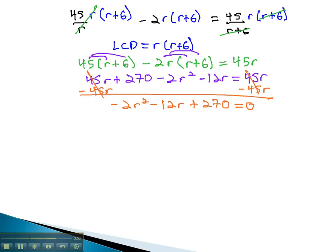We're ready to start solving by factoring. Factoring might be a little difficult with this problem, so how about we complete the square? Let's subtract 270, separating the variables from the numbers. This gives us negative 2r squared, minus 12r, equals negative 270.